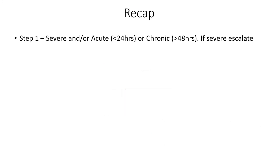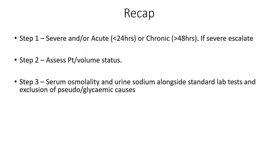Let's do a quick recap. Step one: decide on severity and acuity. If it's severe, come off the algorithm, escalate, speak to your senior, and start emergency treatment. Step two: assess your patient and look at their volume status. Step three: do your lab tests, including those all-important biochemistry tests, and at the same time exclude pseudo or glycemic causes.